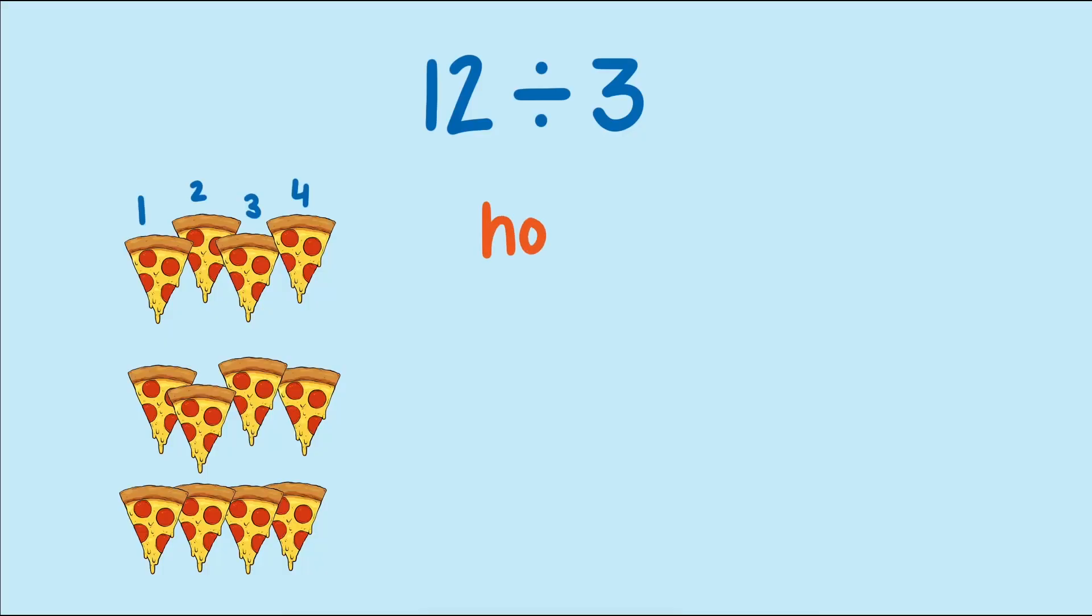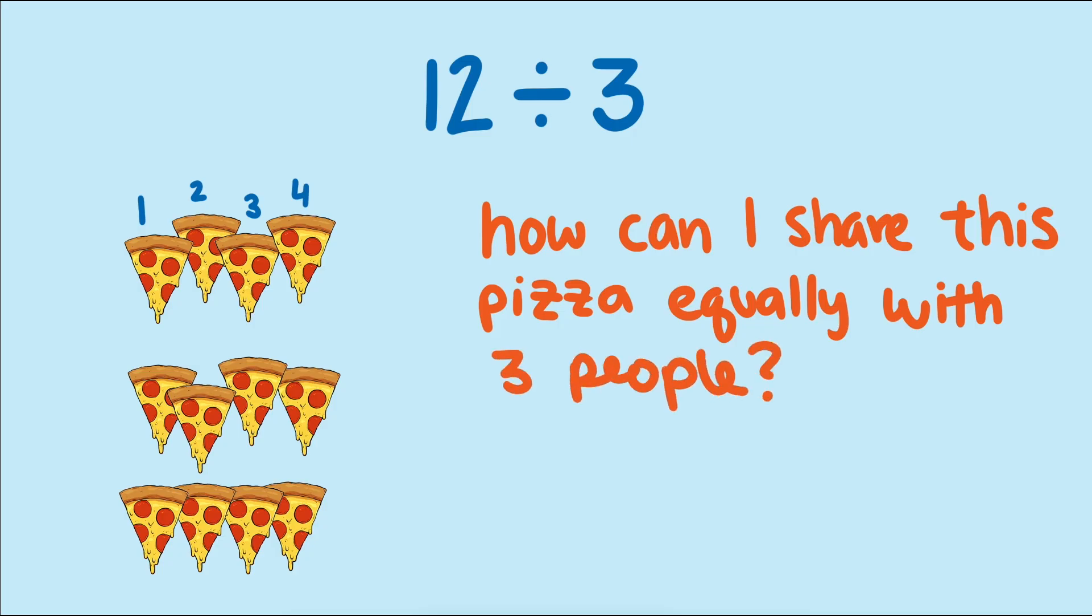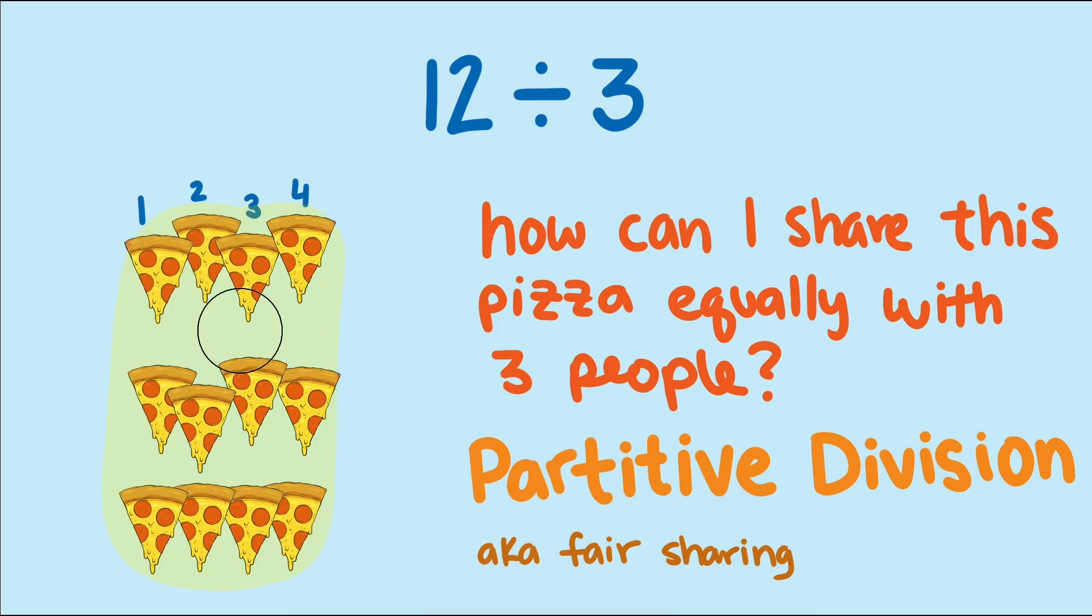If you solved the pizza problem the first way, you were likely thinking, how can I share this pizza equally among three people? We call this partitive division, or sometimes called fair sharing, because we're sharing the total number of objects equally among a group to find how many are in each group. Here the dividend is the total number of objects, the divisor is the number of groups, and the quotient is how many are in each group.